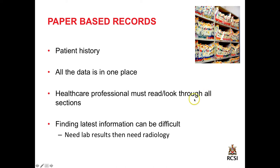The different colored tabs would indicate different types of tests or different parts of the record, so there is some effort to divide the information, but it still needs to be summarized and synthesized. The latest information can be difficult to find — you need lab results and radiology, and you could be flipping back and forward through the information. In many cases, radiology films are not even kept with the paper-based record.